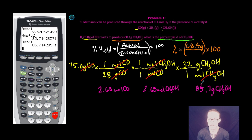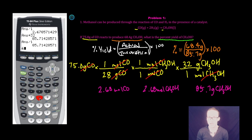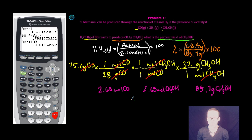Now we're not done — this is just theoretically how much we should have gotten: 85.7 grams. We're told that we only made 68.4 grams, so clearly we're not at 100% — we didn't make as much as we should have in theory. All we have to do is report the percent yield: take our actual of 68.4, divide by our theoretical of 85.7, and multiply by 100. We get a percent yield of approximately 79.8%.